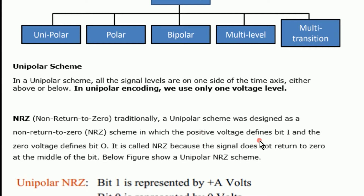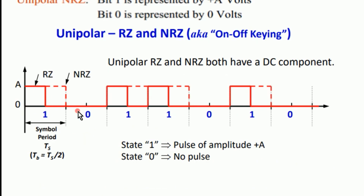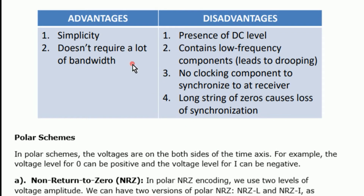In unipolar NRZ, bit 1 is represented by +A volts (e.g., +5 volts) and bit 0 is represented by 0 volts. The advantages of the unipolar line coding scheme include simplicity and low bandwidth requirement. Disadvantages include the presence of a DC level, since direct current contains low-frequency components. There is no clocking component to synchronize at the receiver side, and a long string of zeros causes loss of synchronization.